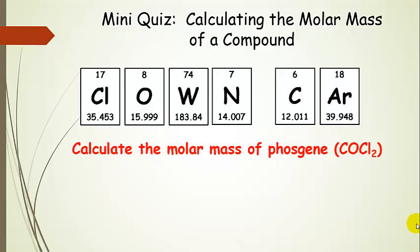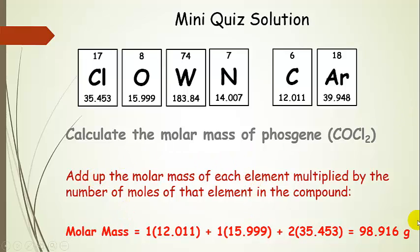Let's do the same thing for phosgene: one carbon atom, one oxygen, and two chlorines. If we want a whole mole of this stuff, it's a mole of carbon, a mole of oxygen, and two moles of chlorine. We add up the molar mass of each element multiplied by the number of moles of that element in the compound — one mole of carbon, one mole of oxygen, and two of chlorine — and we get 98.916 grams per mole.